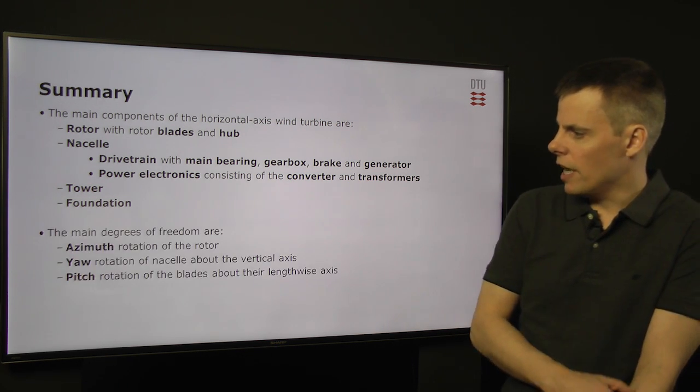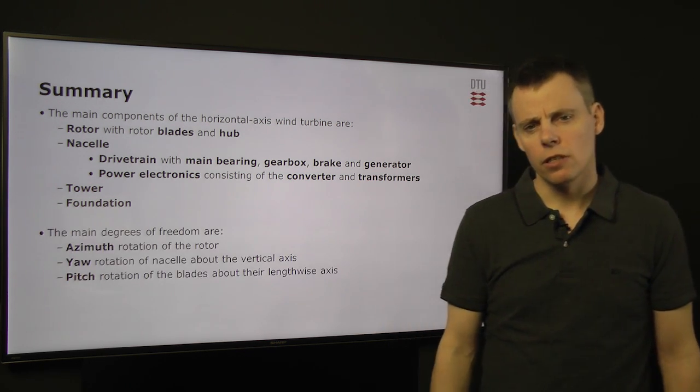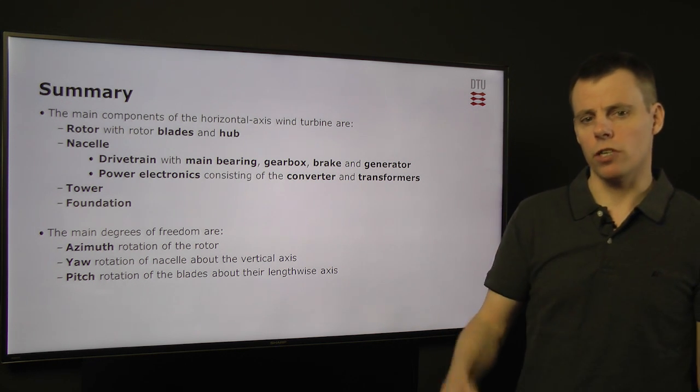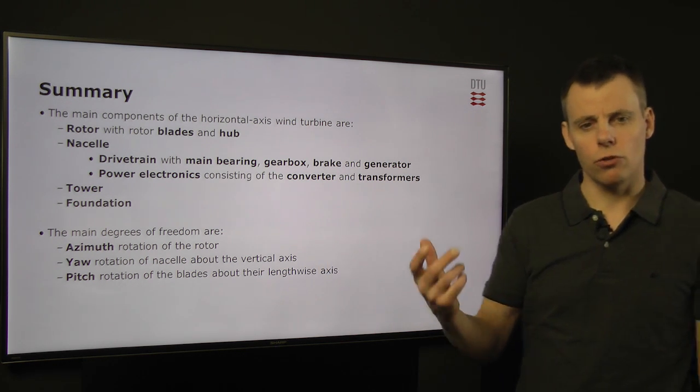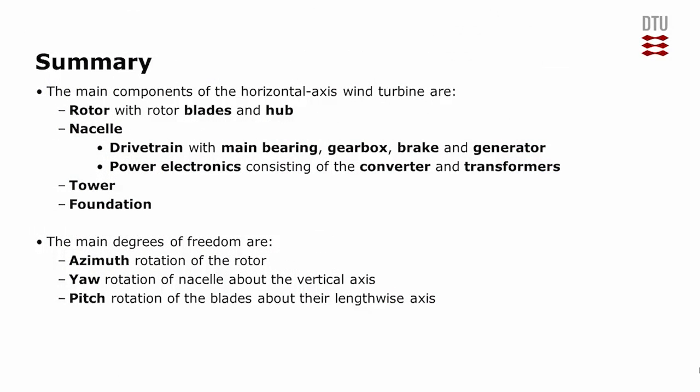The main degrees of freedom is the azimuth rotation of the rotor, which is the one generating the power. The yaw rotation of the nacelle, which makes sure that we can turn the turbine into the wind. And then we have the pitch rotation of the blades about the lengthwise axis, which we use for controlling the aerodynamic torque on the rotor.